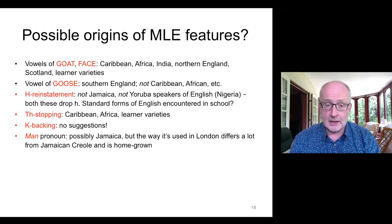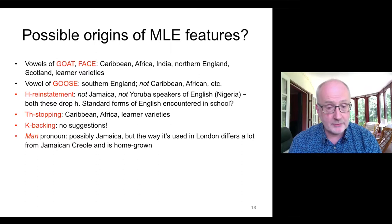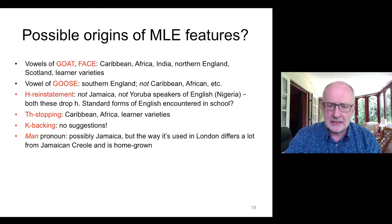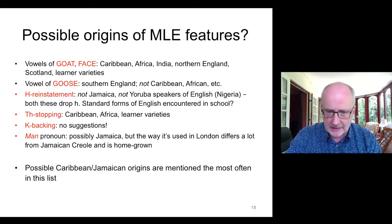As for K backing, there are no firm suggestions. As for the 'man' pronoun, possibly Jamaican in origin, but the way it's used in London differs a lot from Jamaican Creole, so it's basically homegrown now. In reviewing this list, Caribbean and Jamaican origins are mentioned most often — is there a Jamaican advantage? This leads to the demographic explanation and the concept of Salikoko Mufwene's 'founder effect.'